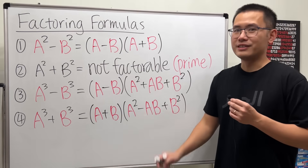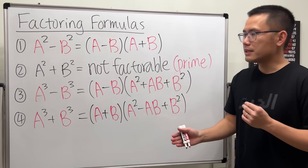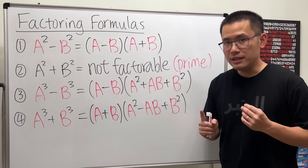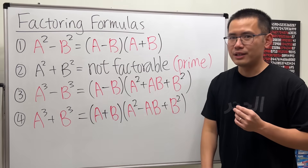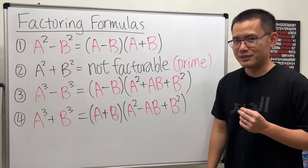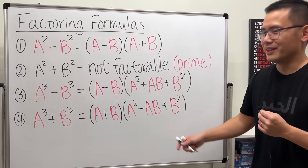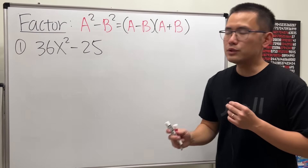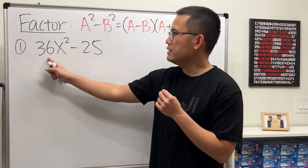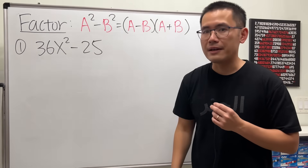Just like that, those are the formulas that we need. Now let's take a look at some examples — if you want to take a screenshot, here's your chance. For the first example we have 36x squared minus 25.